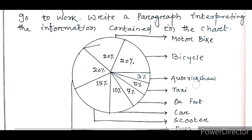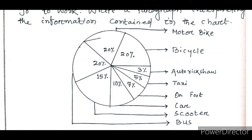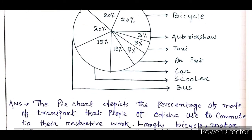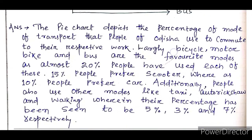Looking at the chart, we can see 20% each for three categories. Those three 20% figures mean: 20% people use motorbike, another 20% use bicycle, another 20% use bus. 15% people use scooter, and 10% use car.